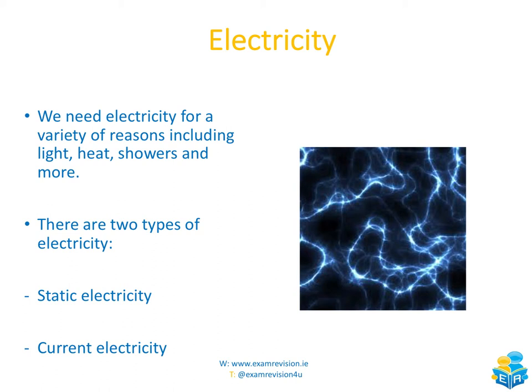When we talk about electricity, we need it for a variety of different reasons — lighting up our homes, heat, having showers and much more. There are two types of electricity: static electricity and current electricity. You will look at both, or will already have looked at both, as part of your Junior Cycle Science course.